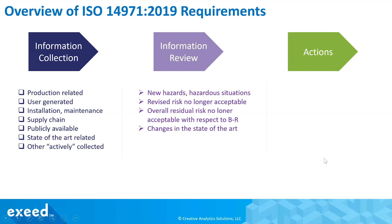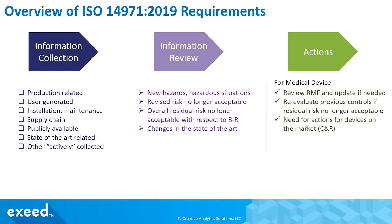On the review side, you need to review new hazards and hazardous situations. I noticed the standard doesn't specifically mention the term 'new harms' — what happens if new harms are detected? Also, if revised risk is no longer acceptable based on new information, or overall residual risk is no longer acceptable with respect to benefit-risk and changes in the state of the art, you need to review that. For actions, you review the risk management file, update if needed, re-evaluate previous controls, and consider corrections and removals for devices on the market.